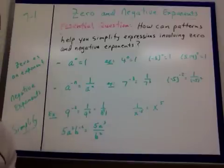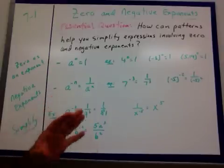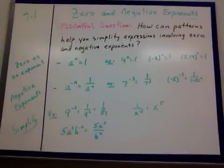All right, Algebra 1, here we go. Moving into Chapter 7. We're going to talk about zero and negative exponents. And our essential question is, how can patterns help you simplify expressions involving zero and negative exponents? Pretty simple topic right here.